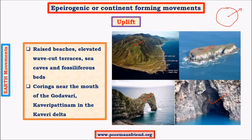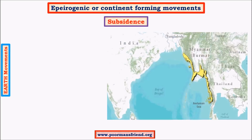Subsidence involves movement towards the center — sinking towards the earth's center. Examples of uplifted landforms in India include Koringa near the mouth of the Godavari River and Kaveripatnam in the Kaveri delta. Koringa is important as a wildlife sanctuary — a mangrove forest and bird sanctuary, making it a useful question for environmental and prelims sections. Kaveripatnam is an historical place in the Kaveri delta.